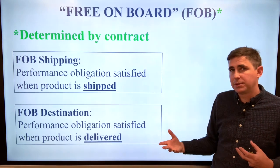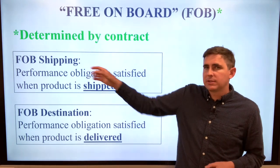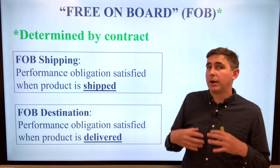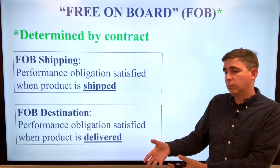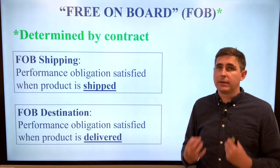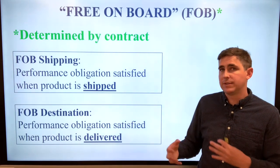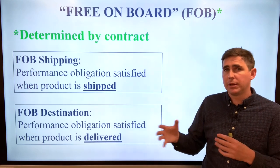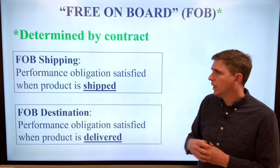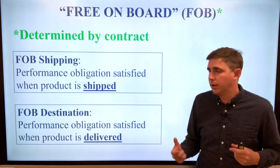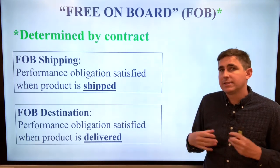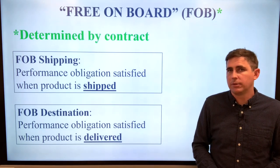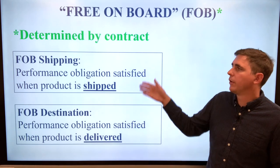There are two different options. FOB shipping point — sometimes called FOB shipping point — is when the performance obligation is satisfied when the product is shipped. Once the product leaves the warehouse, the selling company can recognize revenue. They've satisfied their performance obligation and no longer have the risk of loss. FOB destination point means you can't recognize revenue until the product arrives at the customer's location. Those are the two different terminologies that are used.